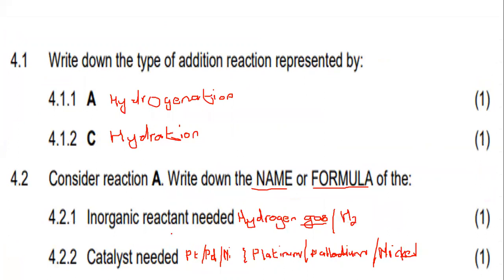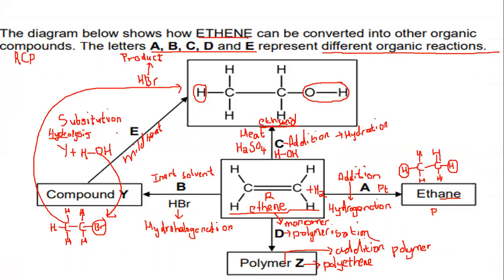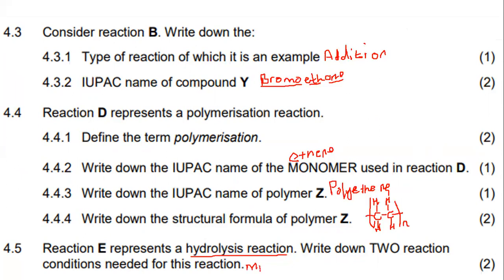For question 4.5 — reaction E represents a hydrolysis reaction. Write down two reaction conditions needed. The answer is: mild heat, and excess water. Those are the two conditions that must be met.